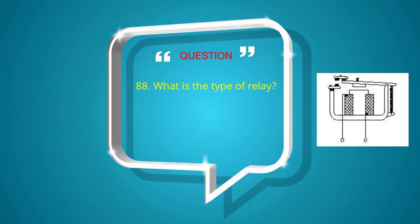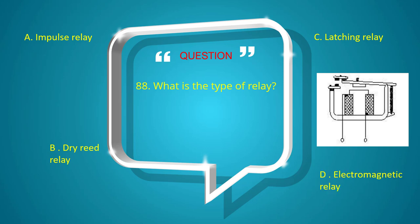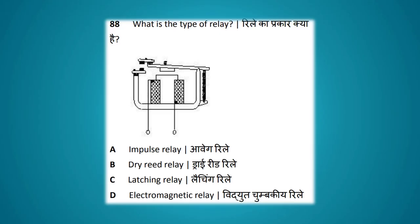What is the type of relay shown? Options: impulse relay, dry reed relay, latching relay, electromagnetic relay. The answer is electromagnetic relay.